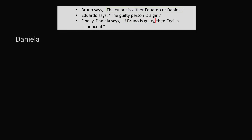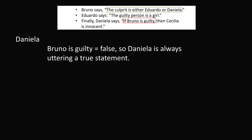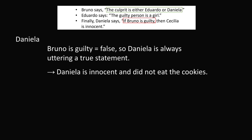So now let's go back to the logic problem. We know that Bruno is telling the truth, so 'if Bruno is guilty' is a false premise. If we have a false premise, that means the entire statement always has to be true. So Daniela is uttering a true statement, which means Daniela is innocent — because someone who says a true statement is innocent and did not eat the cookies. So if we can rule out Daniela, then the culprit has to be Eduardo. The correct answer is E: Eduardo ate the cookies. What an interesting logic puzzle.